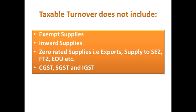What taxable turnover does not include: exempt supplies and inward supplies. Inward supplies means purchases — turnover refers to what you are selling or supplying, not what you are purchasing. However, if there is an import of goods, import of goods is considered as interstate supply, so it comes under taxable turnover for IGST. Zero-rated supplies include exports to other countries, supply to Special Economic Zones, supply to Free Trade Zones, and supply to Export Oriented Units.